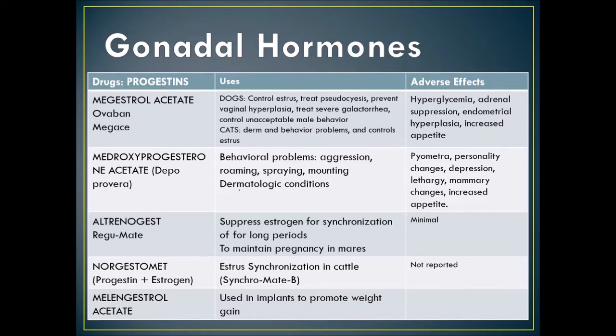Adverse effects of megestrol acetate include hyperglycemia, adrenal suppression, endometrial hyperplasia, and increased appetite. Depo-Provera — medroxyprogesterone acetate — is used for behavioral problems such as aggression, roaming, spraying, and mounting, and can also treat dermatologic conditions. Side effects include pyometra, personality changes, depression, lethargy, and increased appetite.